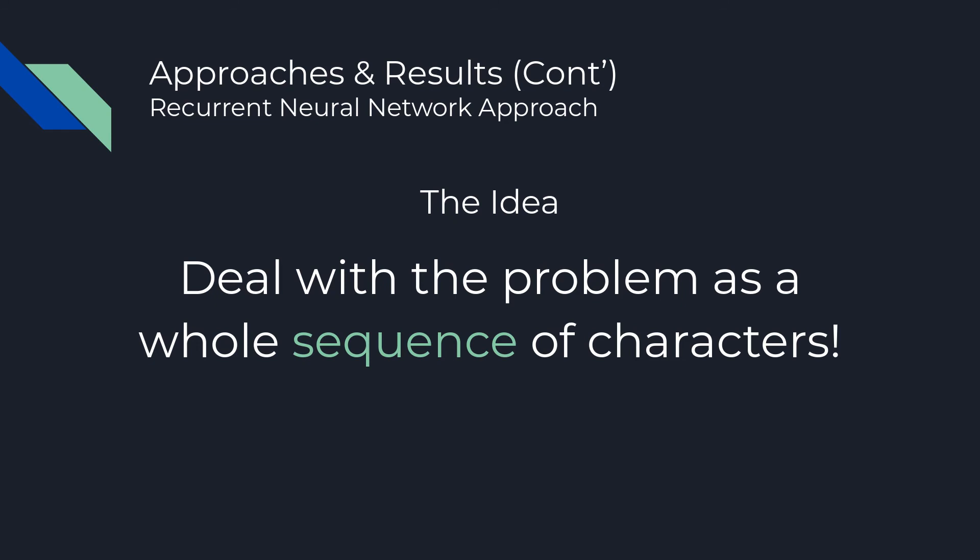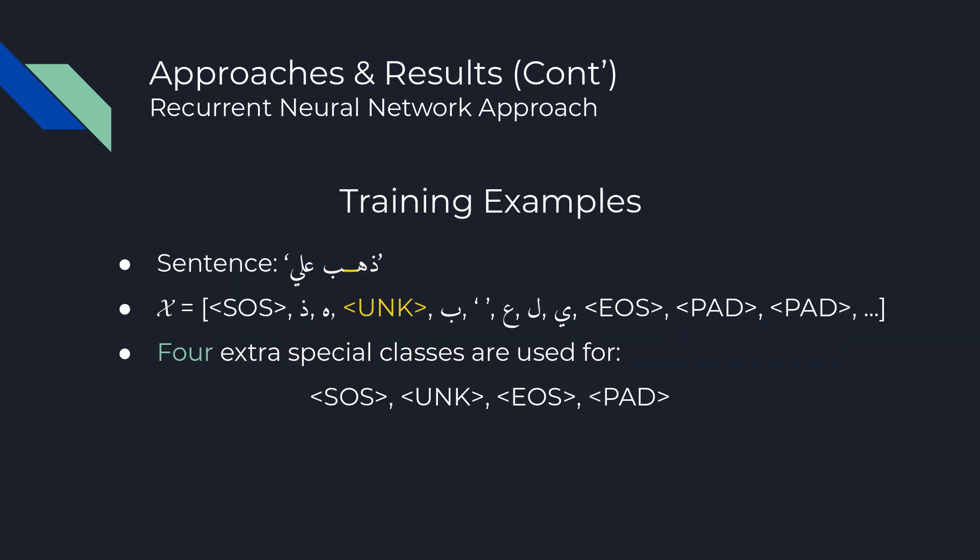In the second approach, we consider each sequence of characters as an example, so the model learns the dependencies between characters and takes context into consideration using recurrent neural networks. Each sequence is converted by prepending a start-of-sequence token and appending an end-of-sequence token. Unknown characters were replaced by a special unknown character, and sequences within the same batch are padded to have the same length. Each input sequence has an output sequence containing the output class for each character.